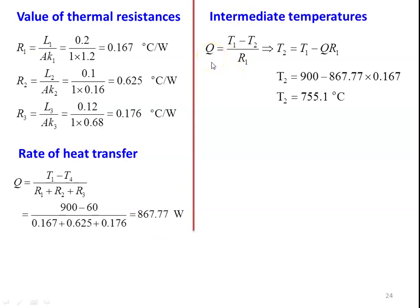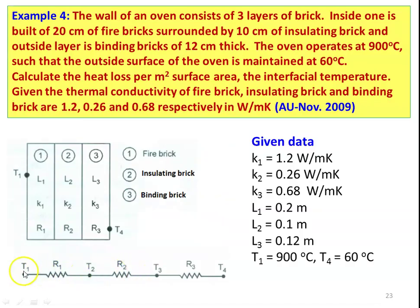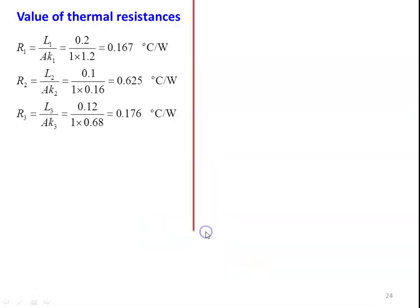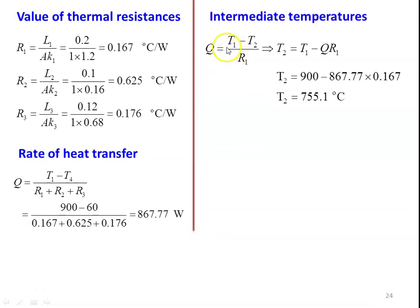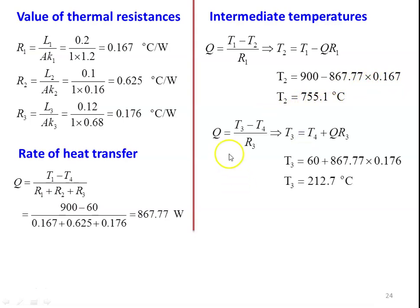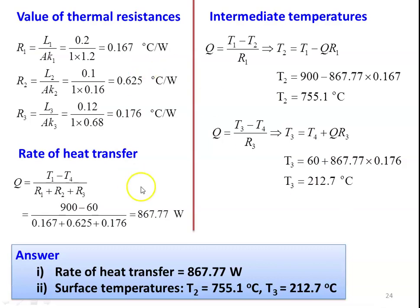To calculate the intermediate temperatures, using the thermal circuit: Q = (T1 − T2)/R1 = (T2 − T3)/R2 = (T3 − T4)/R3. From Q = (T1 − T2)/R1: T2 = T1 − Q·R1 = 900 − 867.77 × 0.167 = 755.1°C. From Q = (T3 − T4)/R3: T3 = T4 + Q·R3 = 60 + 867.77 × 0.176 = 212.7°C. The answers are: Q = 867.77 W, T2 = 755.1°C, T3 = 212.7°C.